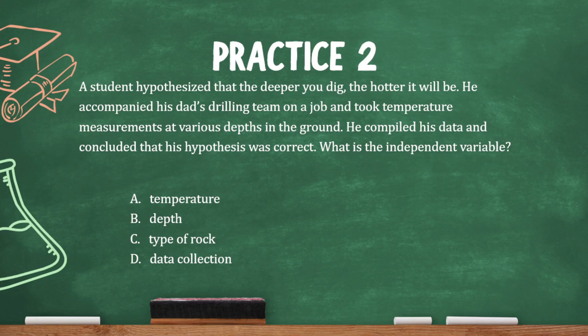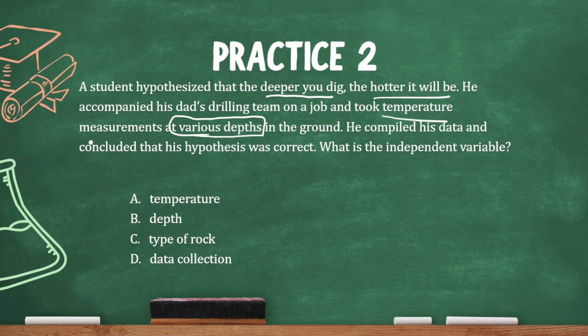A student hypothesized that the deeper you dig, the hotter it will be. He accompanied his dad's drilling team and took temperature measurements at various depths in the ground. He concluded that his hypothesis was correct. What is the independent variable? What he's changing is the depth — the various depths in the ground. The effect, what he's measuring, is the temperature. So the independent variable is the depth.